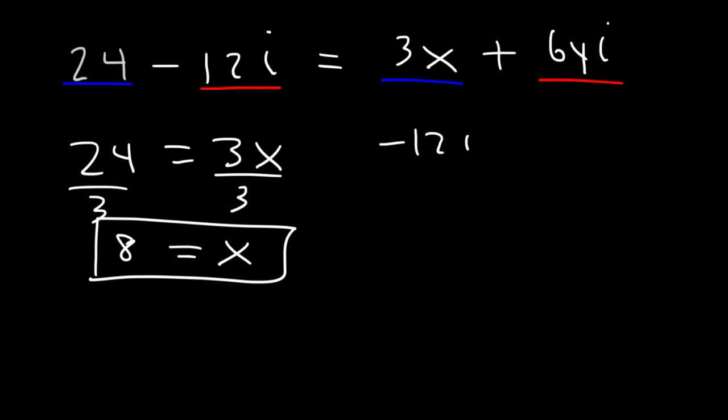Negative 12i is equal to 6y times i. So if we divide both sides by 6i, we can see that y is negative 12 divided by 6, which is negative 2.